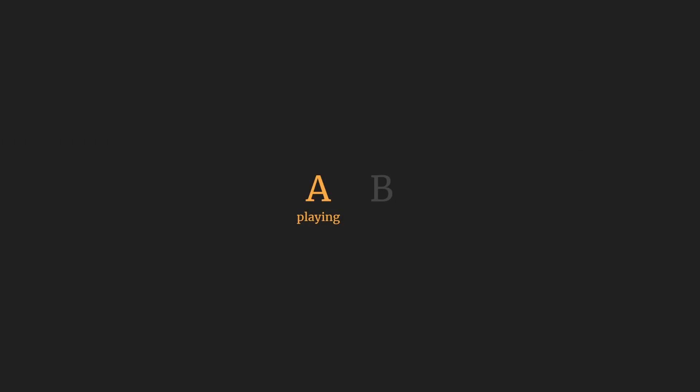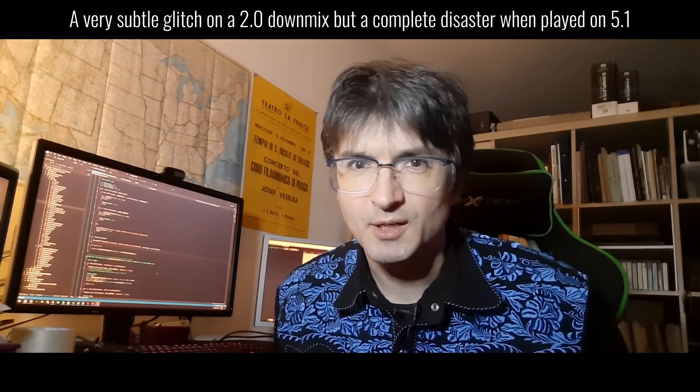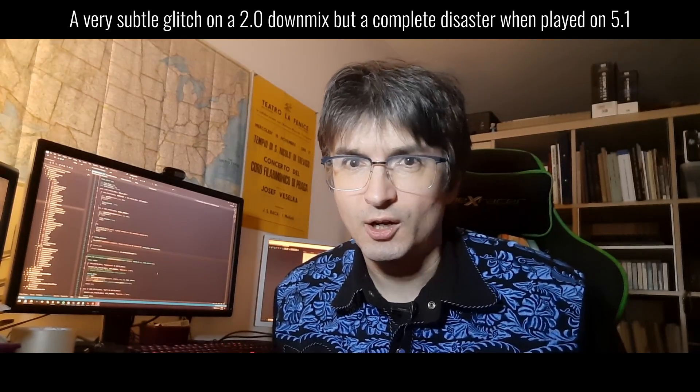I'll play two downmixes of the same cutscene music — one correct, the other a result of channel order mismatch — to see if you can spot the wrong one. The second was the wrong one. Only the original left channel stayed where it was supposed to be; the original right channel was taken for the center, so its content contributed to both outputs. The entire mix sounds a bit heavy on the left, and on a pair of desktop speakers with other people talking, chances are you won't even notice.